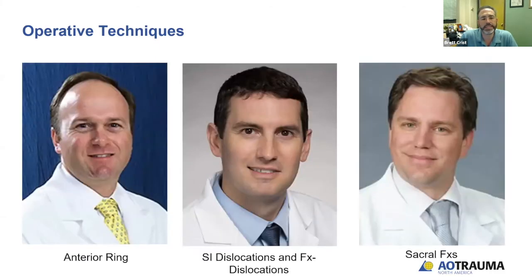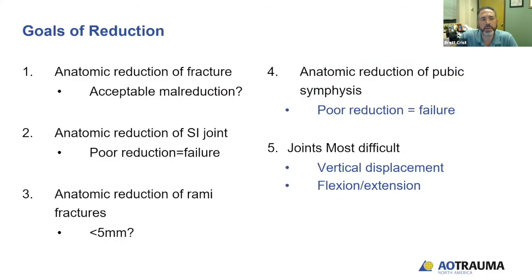Let's move on to operative techniques. James is going to talk about the anterior ring, Connor about SI dislocations and fracture dislocations, and Ray about sacral fractures in general. The goals of reduction — we all strive for anatomical reduction, but what is acceptable malreduction? Definitely the joints matter: SI joints, if not reduced, significantly increase your failure rate. The symphysis, if not reduced properly, goes on to failure. The joints are the most difficult, especially correcting vertical displacement and flexion-extension deformity.